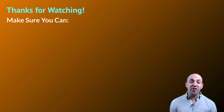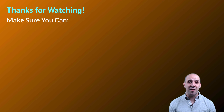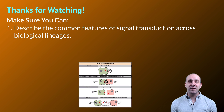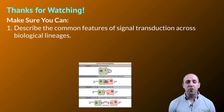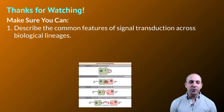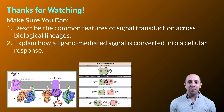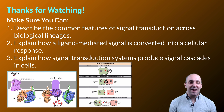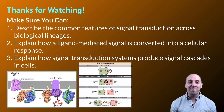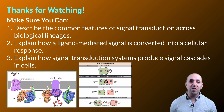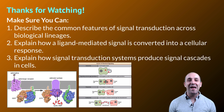Thanks so much for watching our discussion on the specific details of signal transduction pathways in cellular communication. Make sure you can describe the common features of signal transduction across all biological lineages — the kinds of things that serve as the signal and the ways in which those signals are received and cells respond. Make sure you can explain how a ligand-mediated signal is converted into a cellular response. And finally, make sure you can explain how signal transduction systems produce signal cascades in cells and the resulting effects of those cascades. If you can do all those things, you're doing great. If not, that's okay too — take a moment to write down any questions you have so you can get the answers you need. Thanks again for watching. Have a great day.